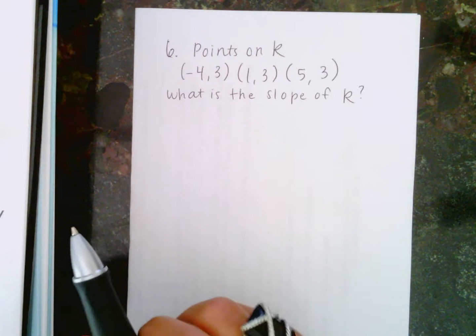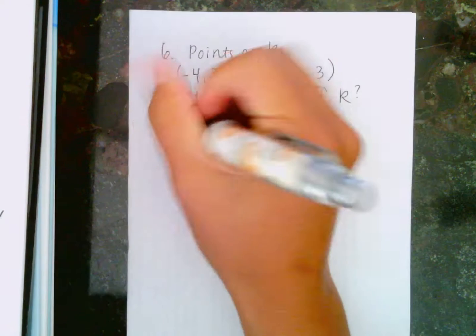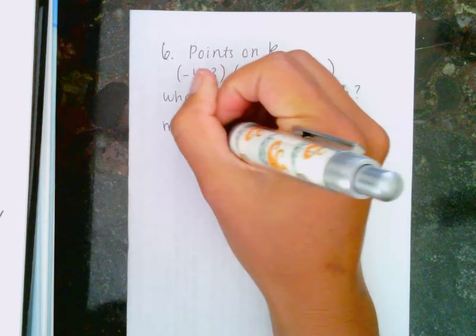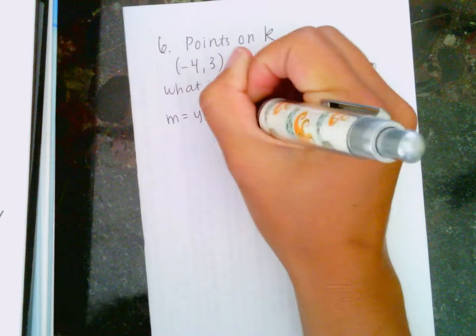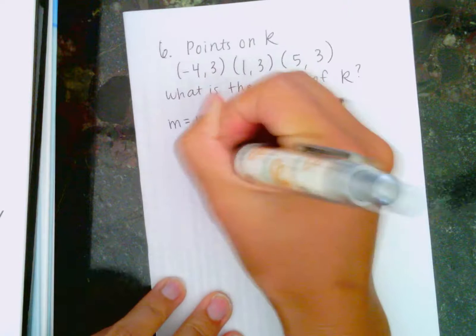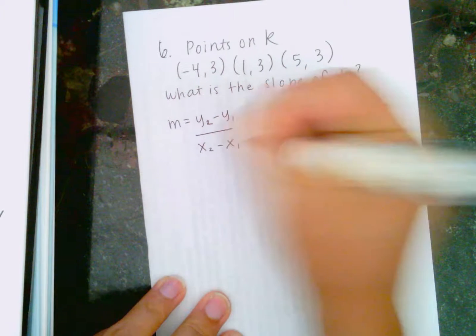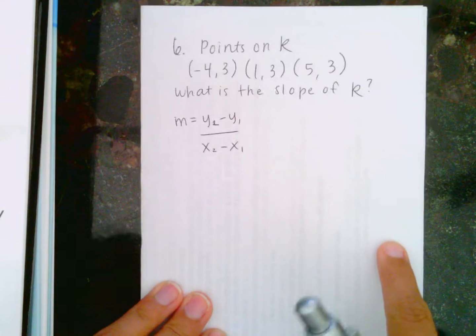what is the slope of R? So we're going to start with the slope formula. M equals y2 minus y1 over x2 minus x1. This is the formula for finding slope.